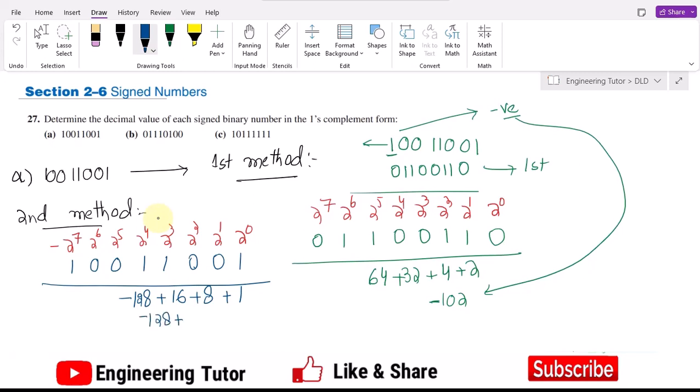That is 24 plus 1 is 25. So minus 128 plus 125 is minus 103. At the end, we have to add 1 with it, so I will get minus 102. This is from method number 2.